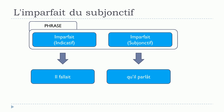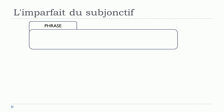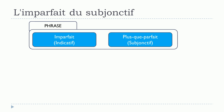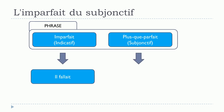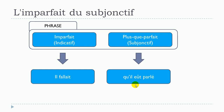It is also possible to have l'imparfait de l'indicatif in the main clause and le plus-que-parfait du subjonctif in the subordonnée. In that case we get: il fallait qu'il eût parlé. Here il fallait is l'imparfait de l'indicatif, and qu'il eût parlé is le plus-que-parfait du subjonctif.